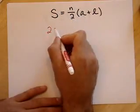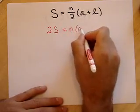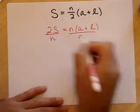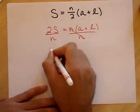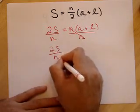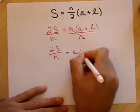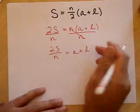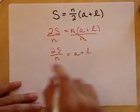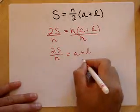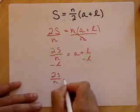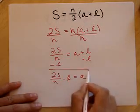And I get 2s equals n times a plus l. And I'm going to divide both sides by n. These guys cancel out. I get 2s over n equals a plus l. And the final thing to solve for a. Suppose I wanted to solve for l, I subtract a from both sides. But if I want to solve for a in terms of l, s, and n, I subtract l from both sides. So I minus l minus l. And I end up with 2s over n minus l equals a. And there's my formula.